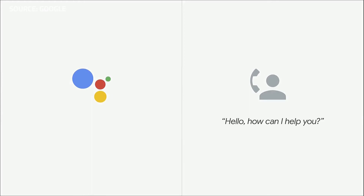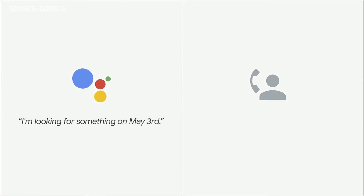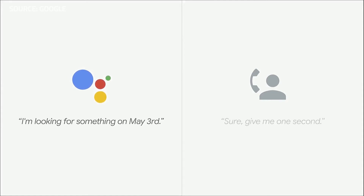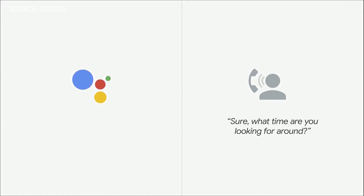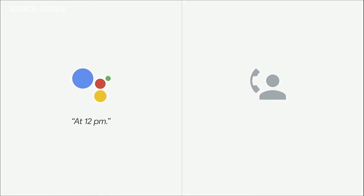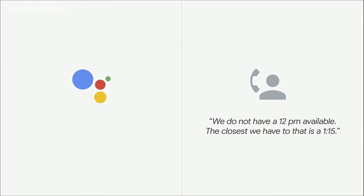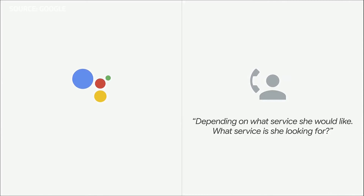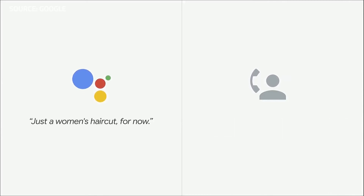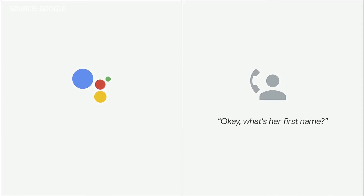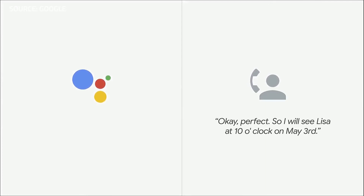Hi, I'm calling to book a woman's haircut for a client. I'm looking for something on May 3. Sure, give me one second. What time are you looking for around? At 12 PM. We do not have a 12 PM available. The closest we have to that is a 1:15. Do you have anything between 10 AM and 12 PM? Depending on what service she would like — what service is she looking for? Just a woman's haircut for now. OK, we have a 10 o'clock. 10 AM is fine. OK, what's her first name? The first name is Lisa. OK, perfect. So I will see Lisa at 10 o'clock on May 3. OK, great. Thanks. Have a great day. Bye.